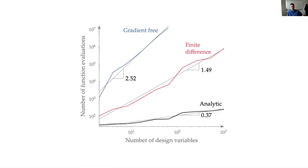As a rule of thumb — based on experience and benchmark papers — somewhere in the neighborhood of 30 variables is a typical large size for gradient-free. Below that, you can usually do pretty well. Once you start getting significantly above that — 50, 100, certainly 1,000 variables — it can be difficult to find a good solution with a gradient-free method, though there are some problems that are still well-suited.